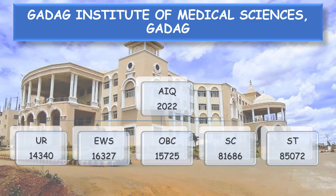Now coming to the cutoff. The latest cutoff for All India Quota Round 1 for the year 2022: Unreserved All India rank 14,340; EWS 16,327; OBC 15,725; SC 81,686 and ST 85,072.